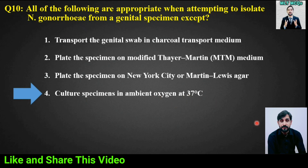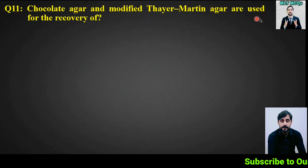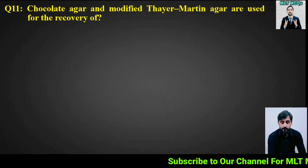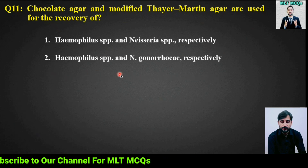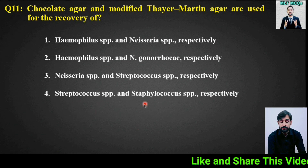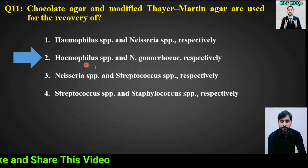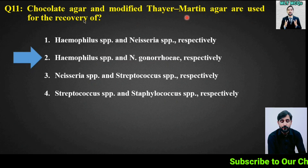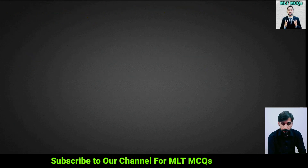MCQ number 11: Chocolate agar and modified Thayer-Martin agar are used for the recovery of — options: (1) Haemophilus species and Neisseria species respectively, (2) Haemophilus species and Neisseria gonorrhoeae respectively, (3) Neisseria species and Streptococcus species respectively, (4) Streptococcus and Staphylococcus species respectively. The right answer is option 2: Haemophilus species and Neisseria gonorrhoeae respectively.